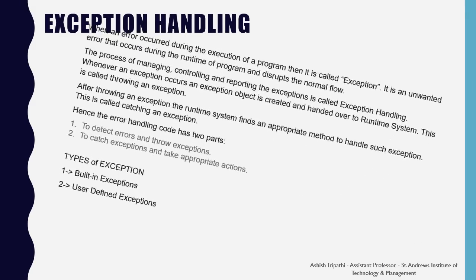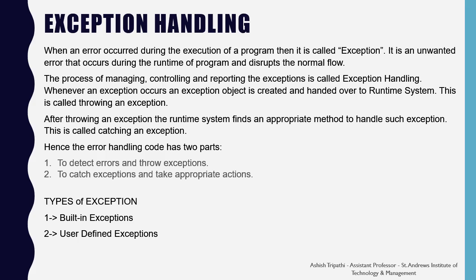When an error occurs during the execution of a program, it is called an exception. It is an unwanted error that occurs during the runtime of a program and disrupts the normal flow. The process of managing, controlling, and reporting the exception is called exception handling. Whenever an exception occurs, an exception object is created and handed over to the runtime system — this is called throwing an exception. After throwing, the runtime system finds an appropriate method to handle it, which is called catching an exception.